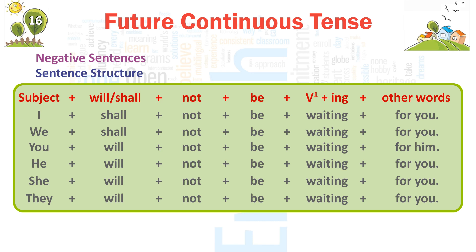He + will + not + be + waiting + for you. → 'He will not be waiting for you.' She + will + not + be + waiting + for you. → 'She will not be waiting for you.' They + will + not + be + waiting + for you. → 'They will not be waiting for you.'